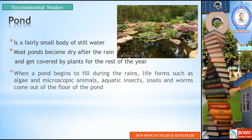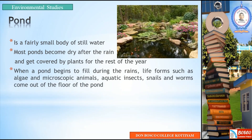When a pond begins to fill during the rains, life forms such as algae and microscopic animals, aquatic insects, snails and worms come out of the floor of the pond. These life forms — algae, aquatic insects, snails and worms — begin to develop in the pond ecosystem.